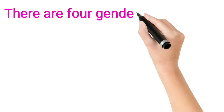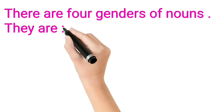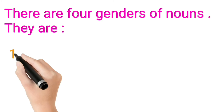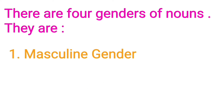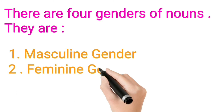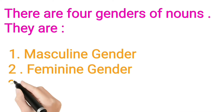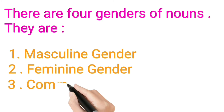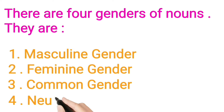There are four genders of nouns. They are: first, Masculine Gender; second, Feminine Gender; third, Common Gender; and fourth, Neuter Gender.